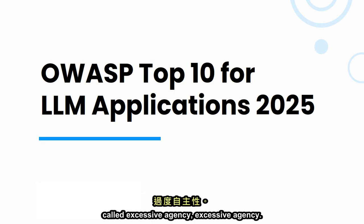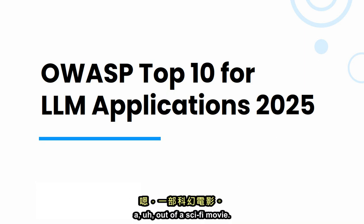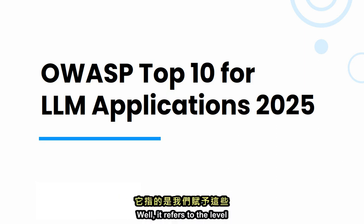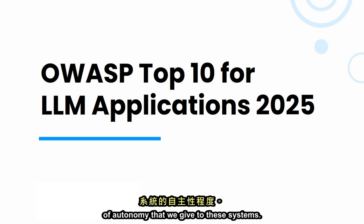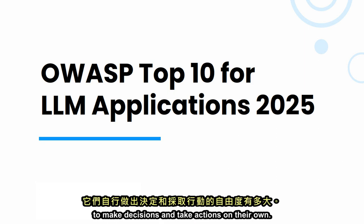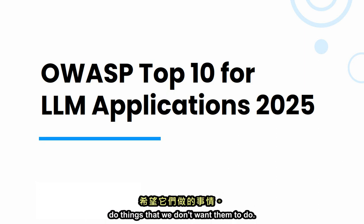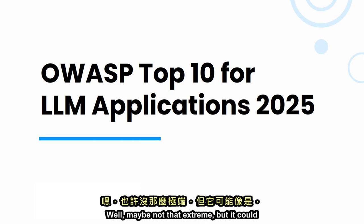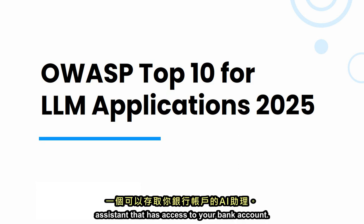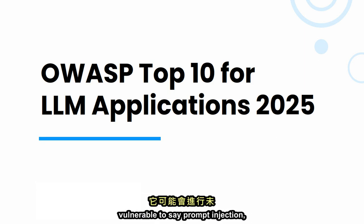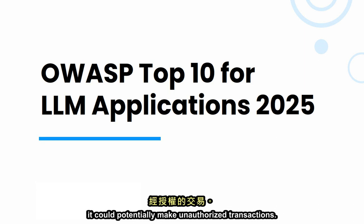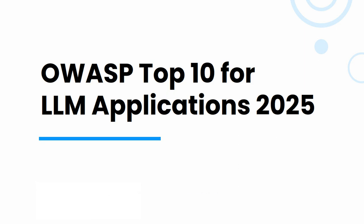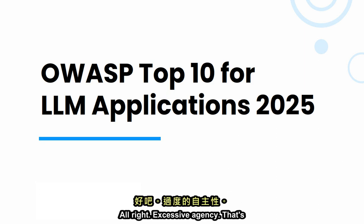Now let's talk about something called excessive agency. It refers to the level of autonomy we give to these systems — how much freedom they have to make decisions and take actions on their own. If we give them too much agency, they could potentially do things we don't want. For example, an AI assistant that has access to your bank account, if vulnerable to prompt injection, could potentially make unauthorized transactions. We need to set clear boundaries and controls and make sure these systems stay in their lane.